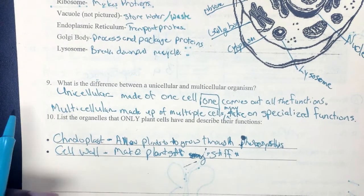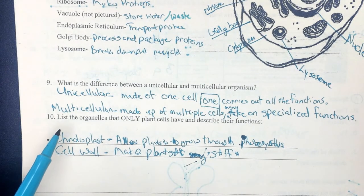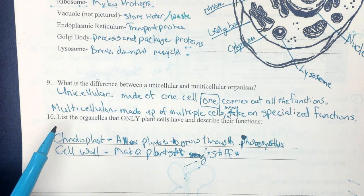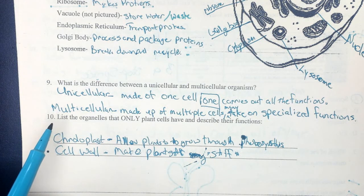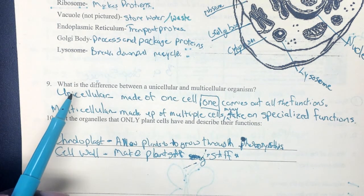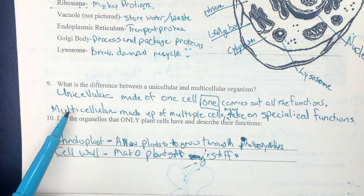Number 9: what is the difference between a unicellular and multicellular organism? Unicellular is made of one cell and carries out all functions. It cannot be seen with the naked eye and must be viewed under a microscope. A multicellular organism is made up of multiple cells, and it takes many cells to have specialized functions or jobs. Multicellular organisms can be seen without a microscope.